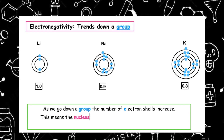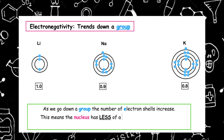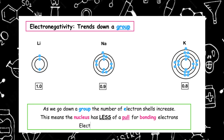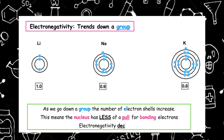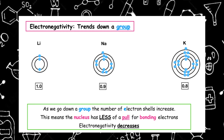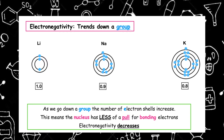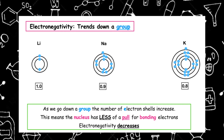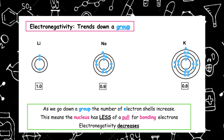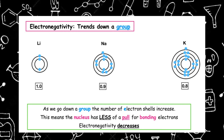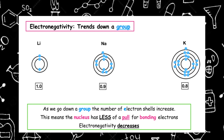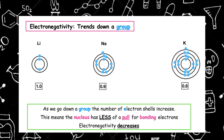This means that the nucleus has less of a pull for bonding electrons, and this is because they're further away from the nucleus. This is known as the shielding effect, and what we can see in the trend is that electronegativity decreases.